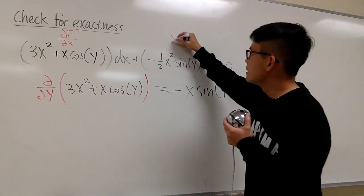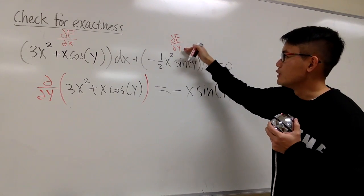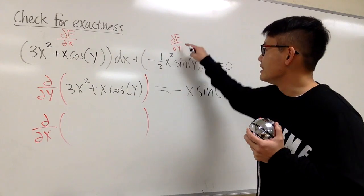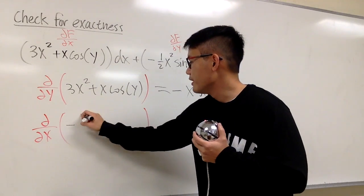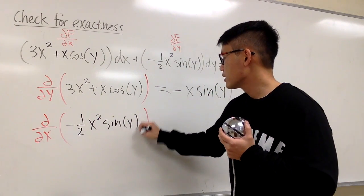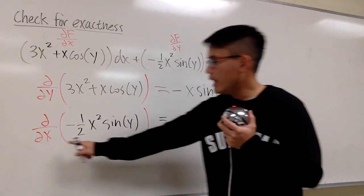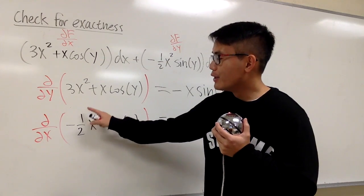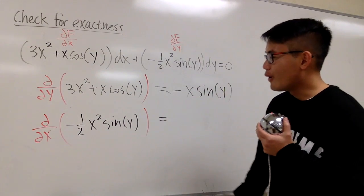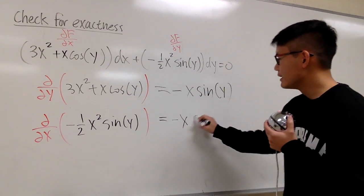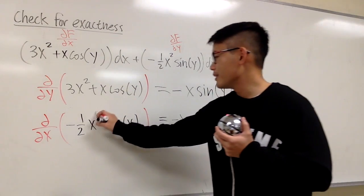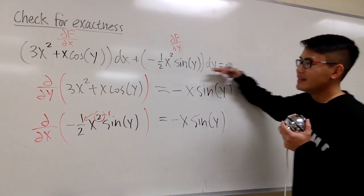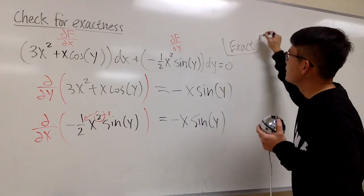Now looking at the N term, hopefully this represents the partial of F with respect to y. I will differentiate N, which is −(1/2)x²·sin(y), with respect to x to check the mixed partial. X is the variable, y is the constant, so this and sin(y) stay. We focus on x²: bring the 2 to the front, 2 and 1/2 cancel, and subtract 1 from the exponent. All in all, we get −x·sin(y). As we can see, these two results are indeed the same, which means this is an exact equation.